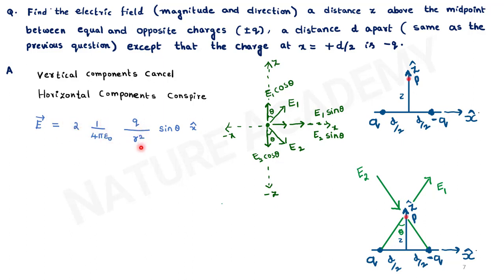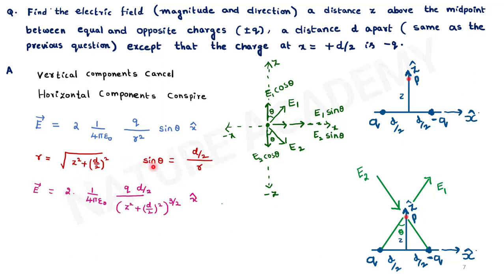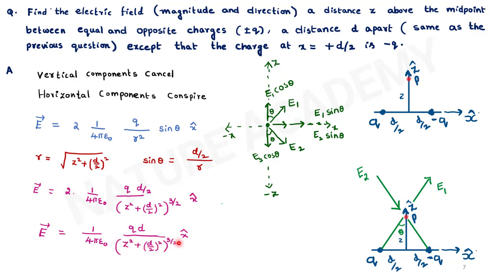So E-bar equals 2 times 1 over 4π epsilon-naught times Q over r-squared times sin theta, times x-cap. Here r equals the square root of z-squared plus (d/2)-squared, and sin theta equals (d/2) divided by r. Substituting: E-bar equals 2 times 1 over 4π epsilon-naught times Q(d/2) over (z-squared plus (d/2)-squared) to the power 3/2 times x-cap. Simplifying: E-bar equals 1 over 4π epsilon-naught times Qd over (z-squared plus (d/2)-squared) to the 3/2, times x-cap.